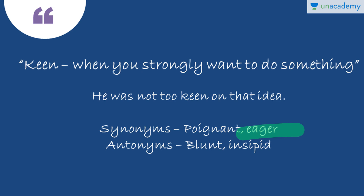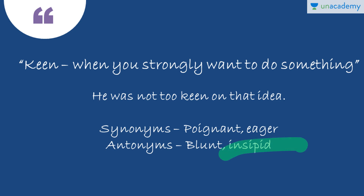Antonyms for keen: the first is blunt. Blunt means when you reduce the force of something — like blunted determination. You had a lot of determination at the start, but now the determination is less. Earlier the desire was more than enough to do that thing, but now the desire is actually not enough. The next antonym is insipid, meaning lacking in interest in doing something. Earlier you had a strong desire, but now you are lacking in interest. This is how you use insipid as an antonym for keen.